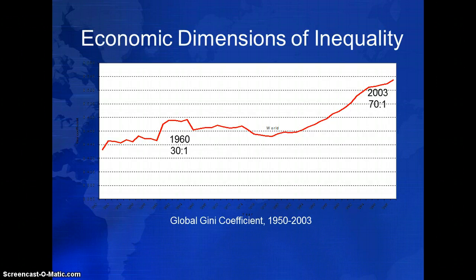There are at least three dimensions of global inequality that divide the Global North and Global South. The first is economic. Since 1960, the ratio of wealth between the richest quintile and the poorest quintile has increased from 30 to 1 to 71 to 1. Over the same period, the global Gini coefficient, a measure of wealth distribution and inequality, has increased markedly.